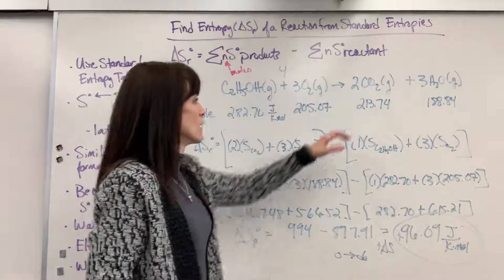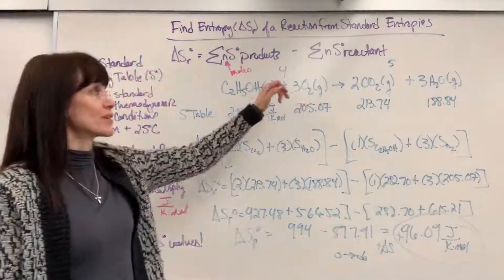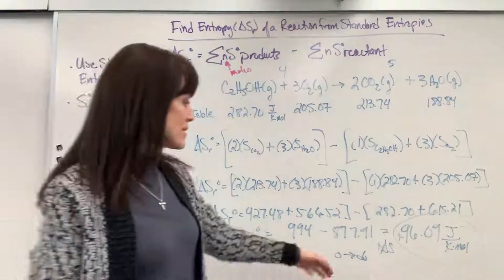Over here, I've got 2 plus 3, 5 moles. Going from 4 moles to 5 moles, that's from order to disorder, which the entropy would be spontaneous. Positive, right there.